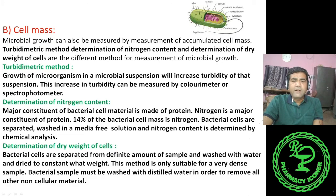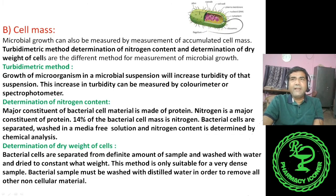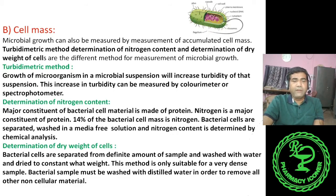Determination of nitrogen content: nitrogen is a major constituent of microbial cells, comprising about 40% of the bacterial cell mass. By determining the nitrogen content, we can measure the number of cells. However, nitrogen may also come from the media, which could give an erroneous result. In dry weight determination, a specific amount of microbial suspension is filtered and dried to a constant weight to determine dry weight, which corresponds to the number of cells.